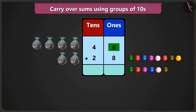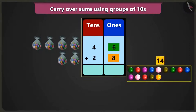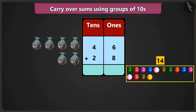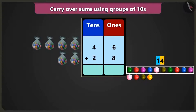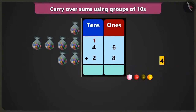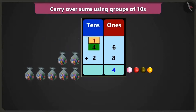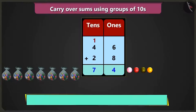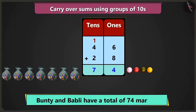Now in the box of ones, to add six ones and eight ones — after six: seven, eight, nine, ten, eleven, twelve, thirteen and fourteen marbles. Fourteen, that is one ten and four ones. So from fourteen, we will take one ten and write it in the box of tens on top in small letters, and write four in the box of ones. Now in the box of tens, adding one ten and four tens we get five tens. Adding five tens and two tens will be seven tens, that is seventy. So now we have a total of seven tens and four ones, that is seventy-four marbles.